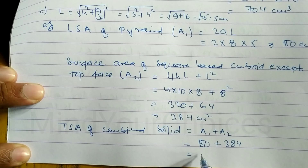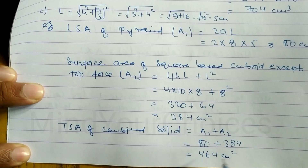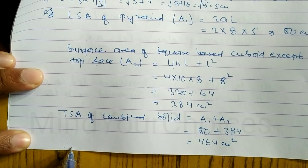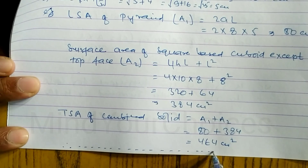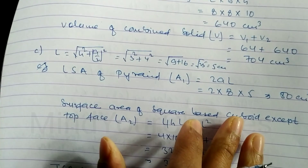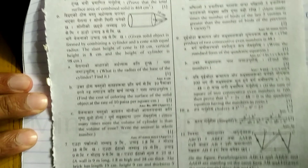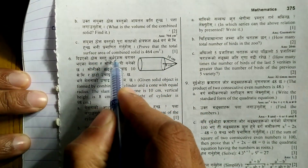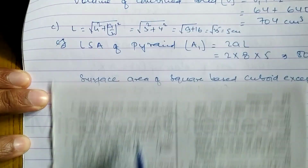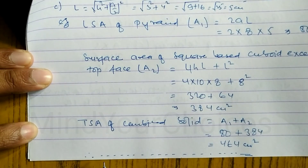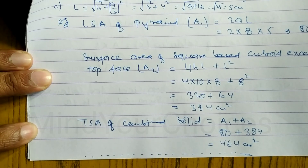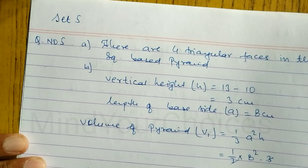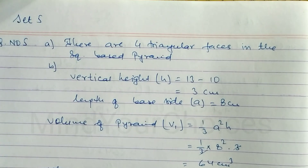Adding these together: 80 + 384 = 464 cm². Therefore, the total surface area of the combined solid is 464 cm². Hope you understand this question taken from Set 5. Please like and subscribe, and continue to the next video.